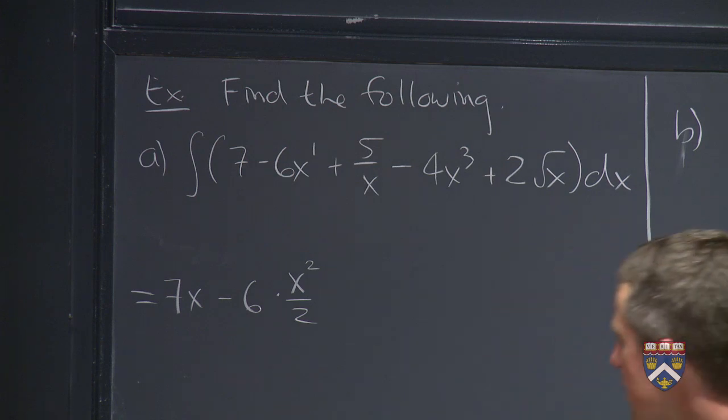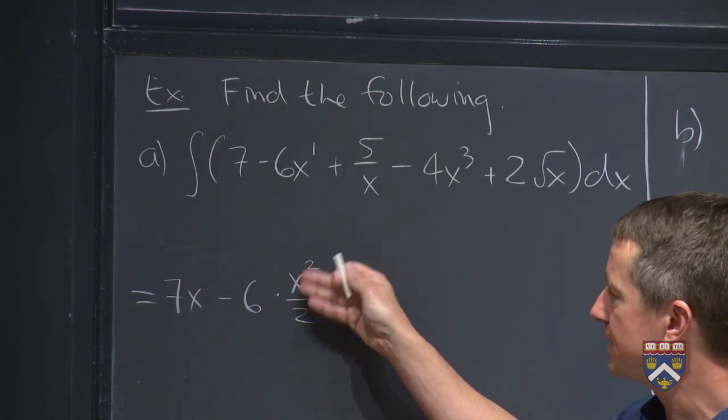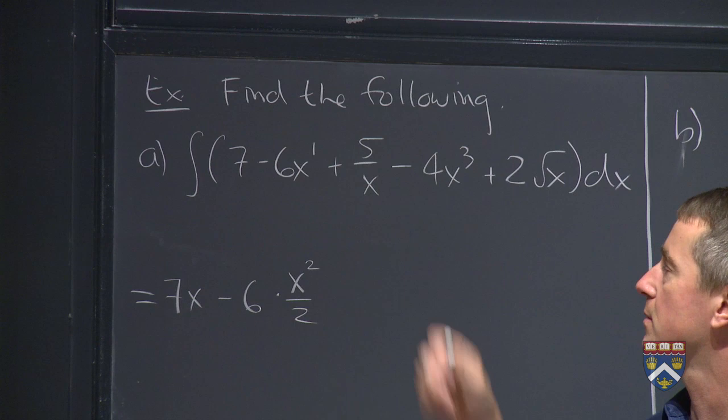If we take the derivative of x squared over 2, the 2 comes down, cancels the 2 on the bottom, and we just get x, which is what we're supposed to get.